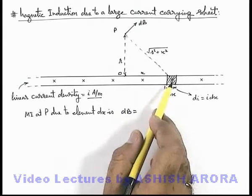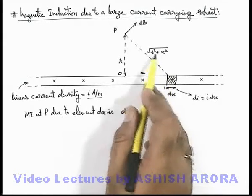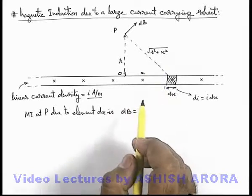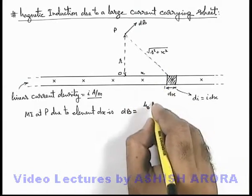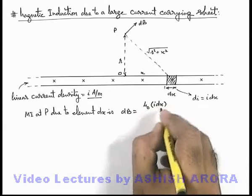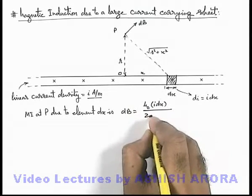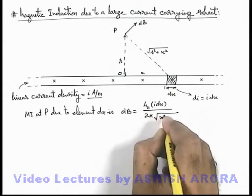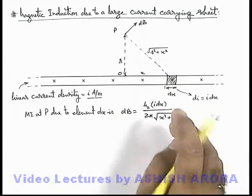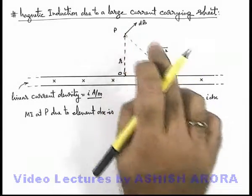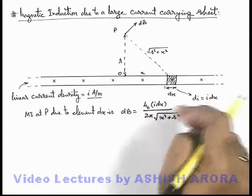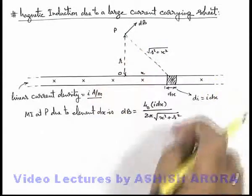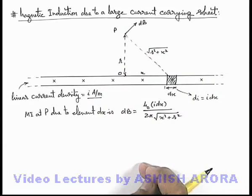And magnetic induction due to a straight long wire at a distance given as root of r square plus x square can be written as mu not, the current here is i dx, divided by 2 pi root of r square plus x square. So here current is replaced by i dx and distance is replaced by root of r square plus x square.